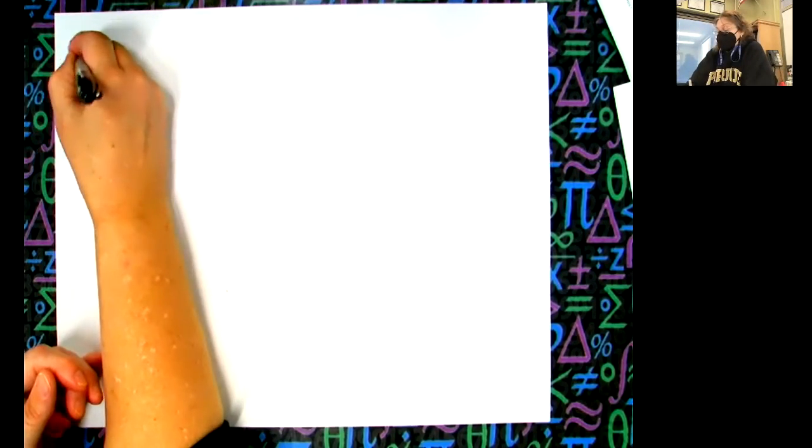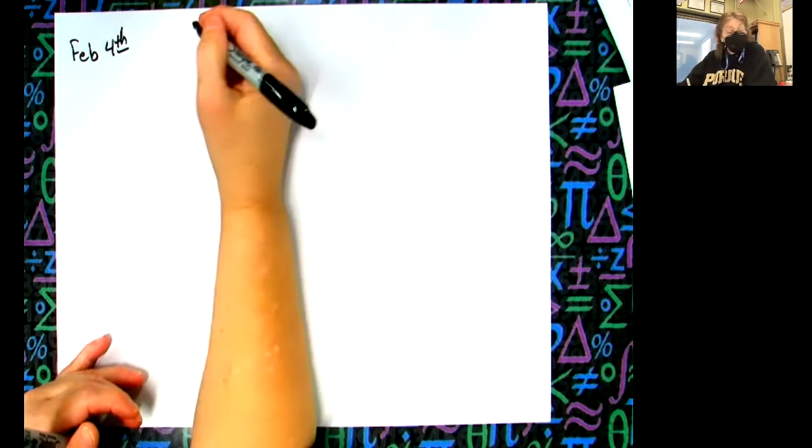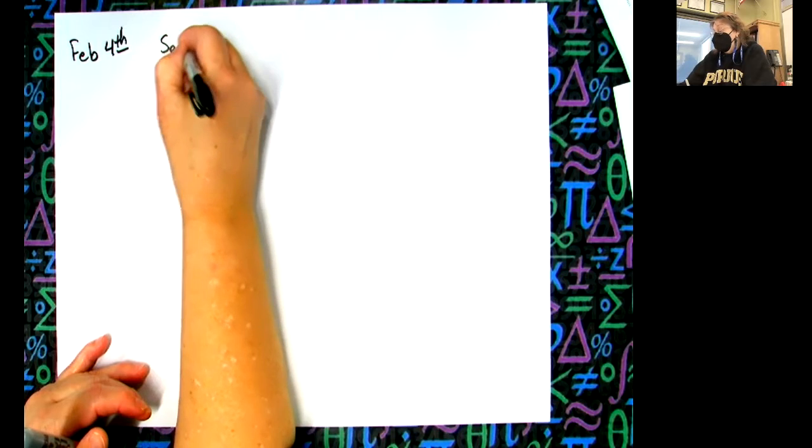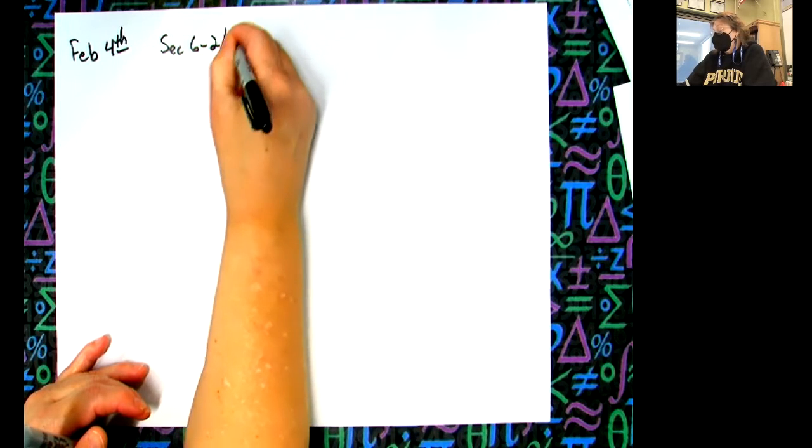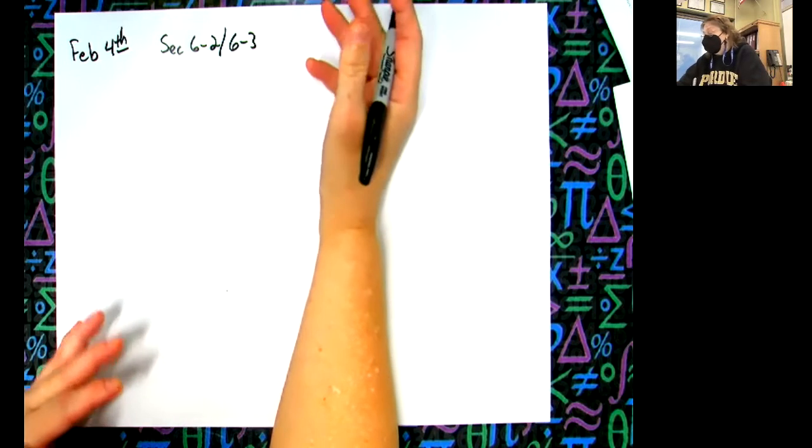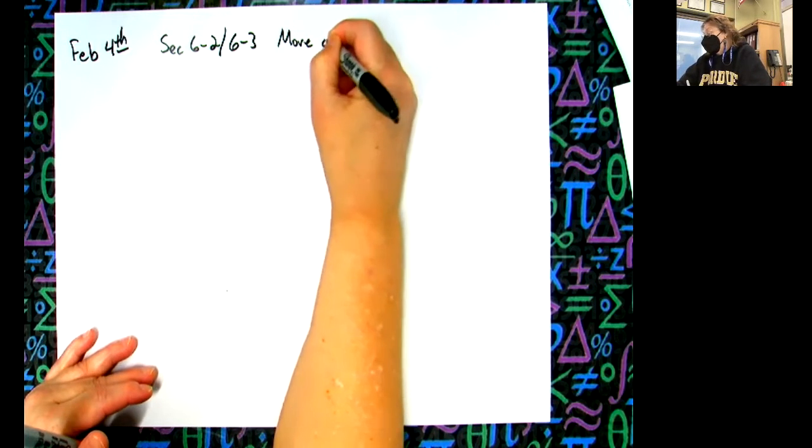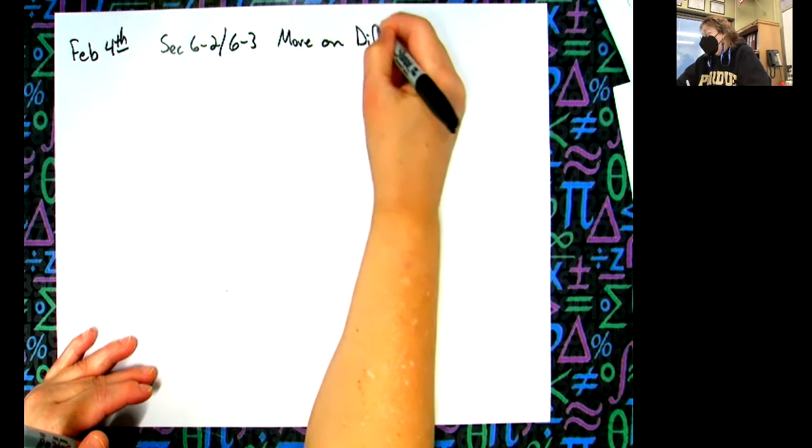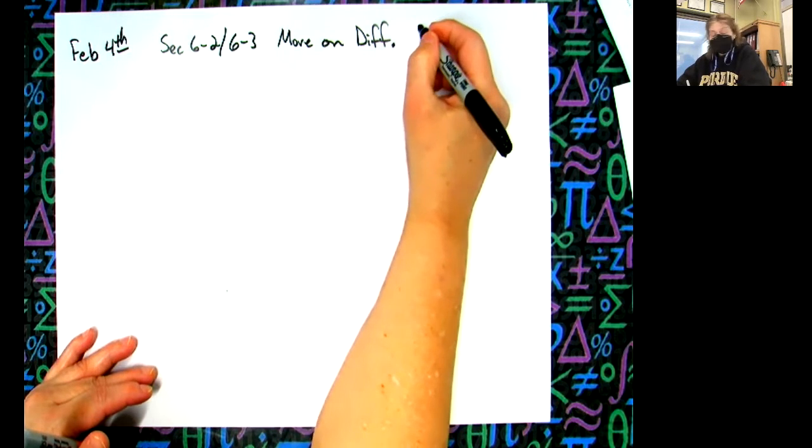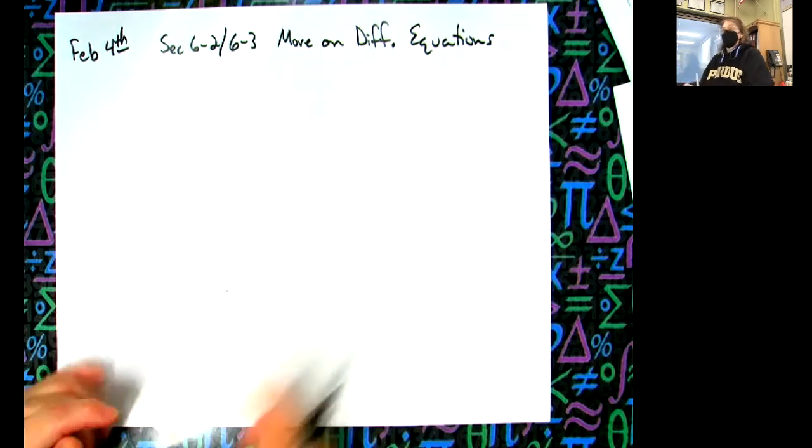Alright, February 4th. This is a little bit out of section 6-2, a little bit out of 6-3. We're continuing this because we're just dealing with some more stuff on differential equations. I'm going to abbreviate because I'm going to run out of room here. So we're going to deal with more on differential equations.